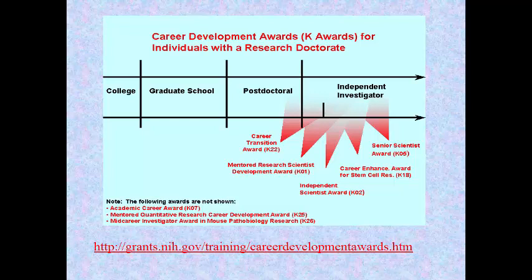For individuals with a research doctorate — college, graduate school, postdoc, then independent investigator — most K awards are for the young independent investigator. The K01 straddles this line. If you knew you were staying at the same place and had a commitment to lab space and a job, you might apply for a K01 in your last year of your postdoc. But if you're switching institutions, I'd hold off until you get to the new place.